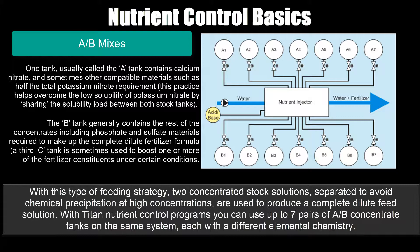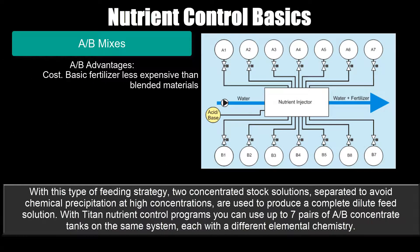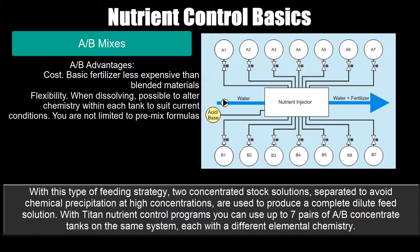A third C tank is sometimes used to boost one or more fertilizer constituents under certain conditions. Some advantages of AB mixes include cost, as basic fertilizer constituents are usually less expensive than blended materials, and flexibility: when dissolving materials for each stock tank refill, it's possible to alter the chemistry within each tank to suit current conditions. You are not limited to pre-mix formulas supplied by fertilizer companies, and you can vary the injection ratios between the A and B tanks at any time.